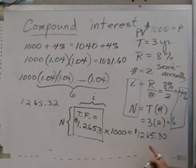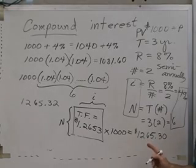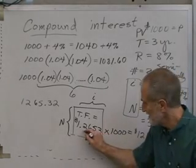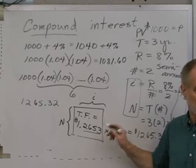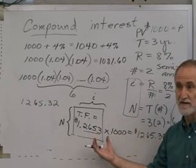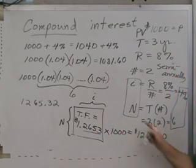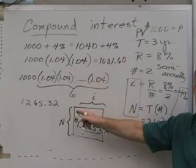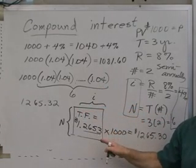Notice that we're 2 cents different. The reason that we're 2 cents different is that this number is not exact in the table. It's been rounded to 4 decimal places. And that's what accounts for the difference. When you do it by hand, you're using the real number.